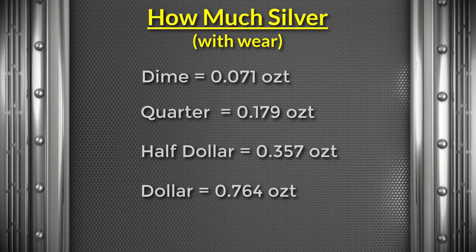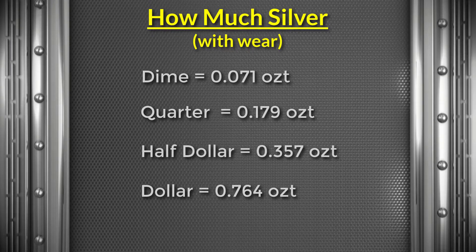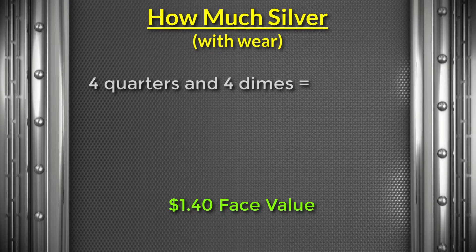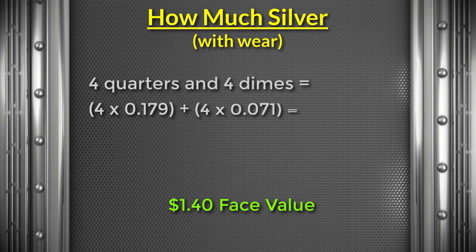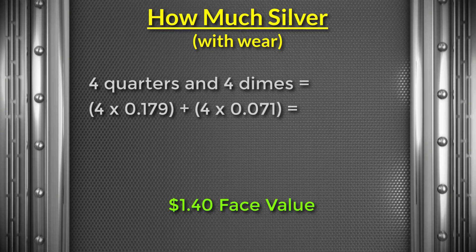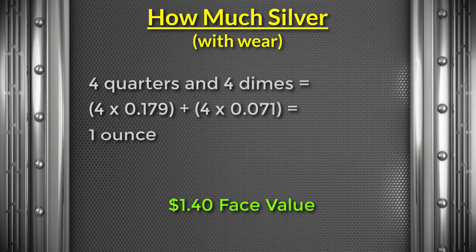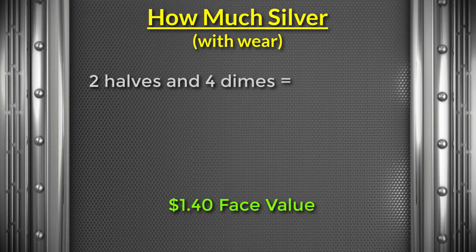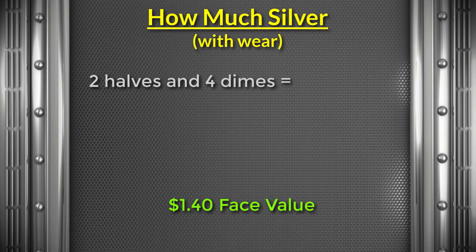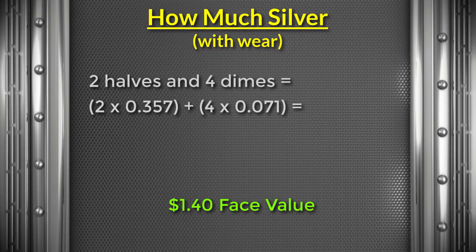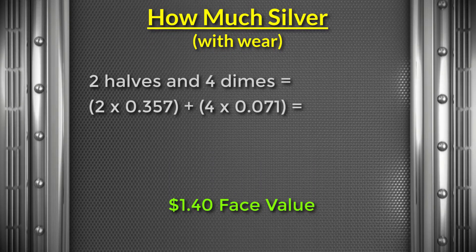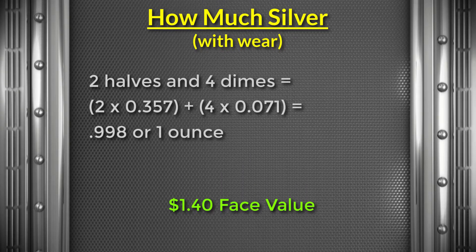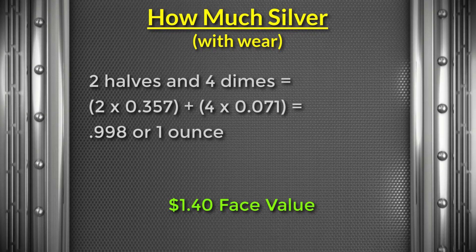Going back to our $1.40 reasoning — $1.40 of face value being 1 ounce of silver — if you take four quarters and four dimes, that's four times 0.179 plus four times 0.071, and that equals one ounce. If you take two half dollars and add four dimes, making $1.40, you have two times 0.357 plus four times 0.071, which equals 0.998 — just a little less than an ounce, but close enough.